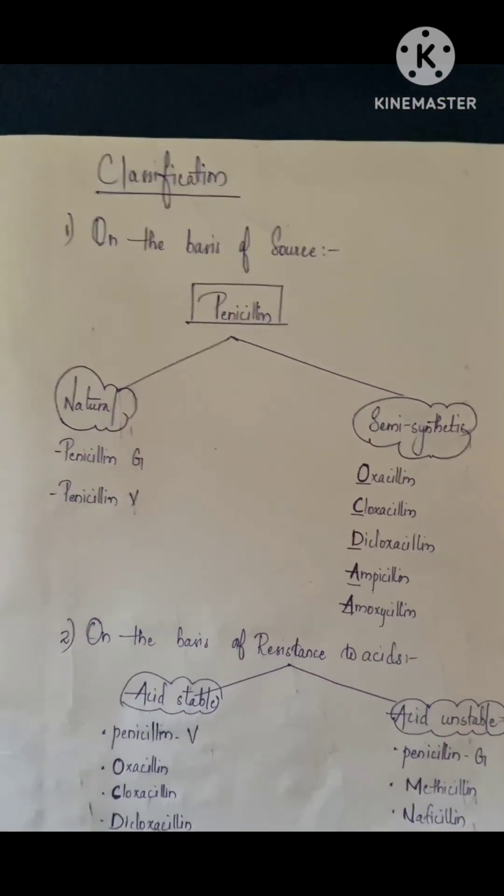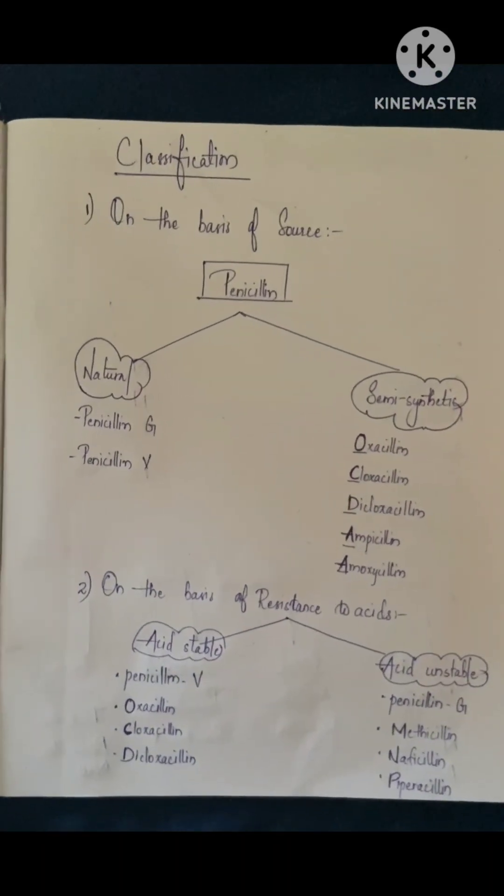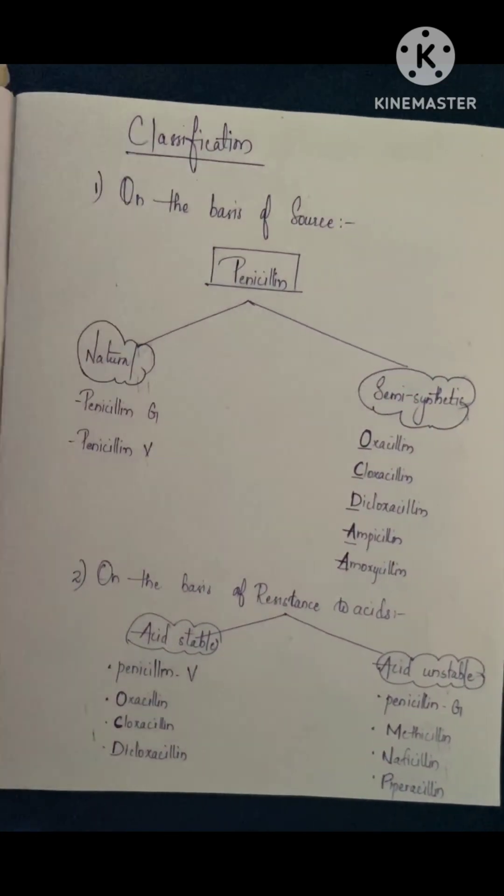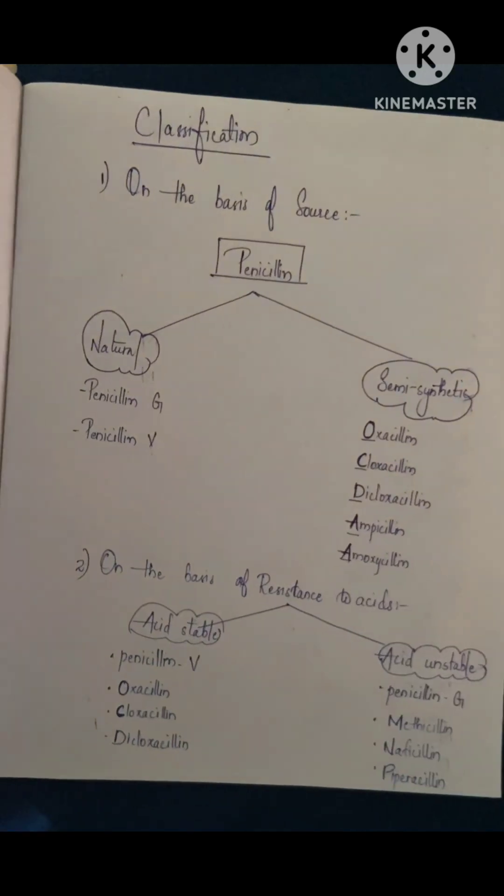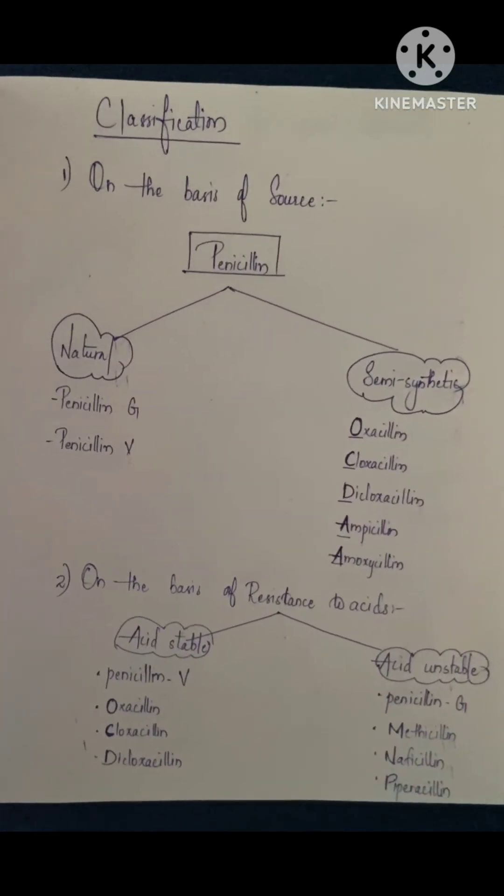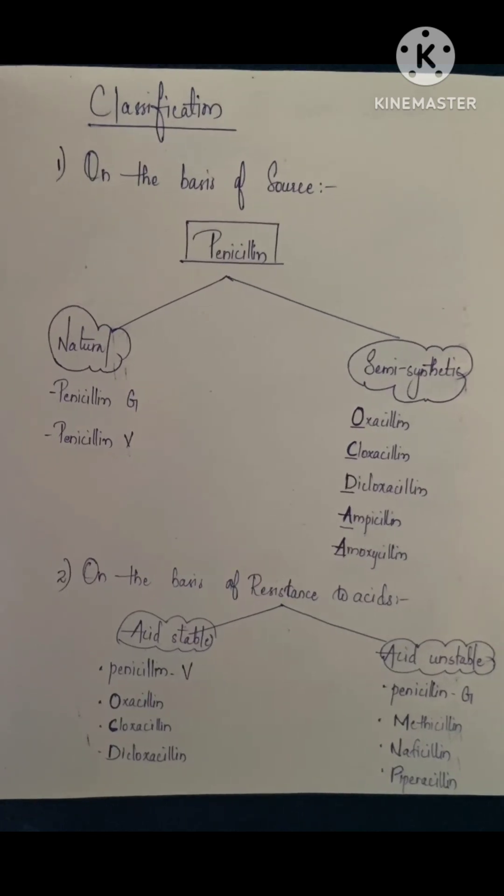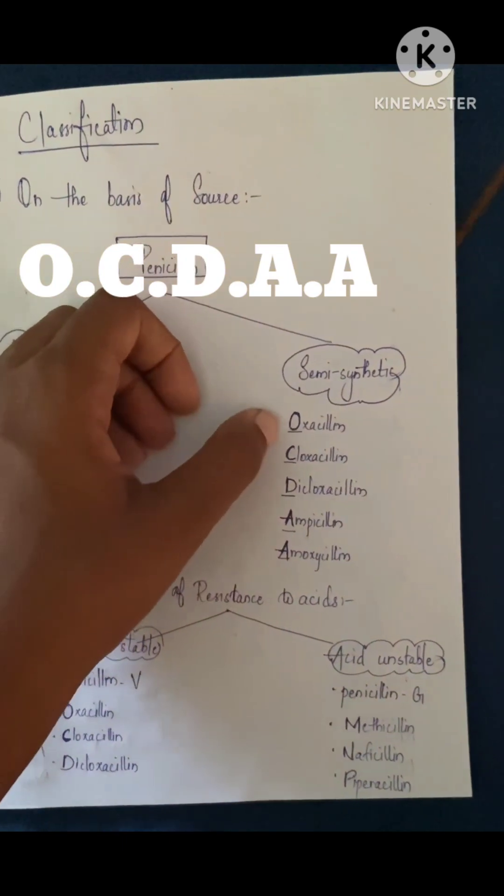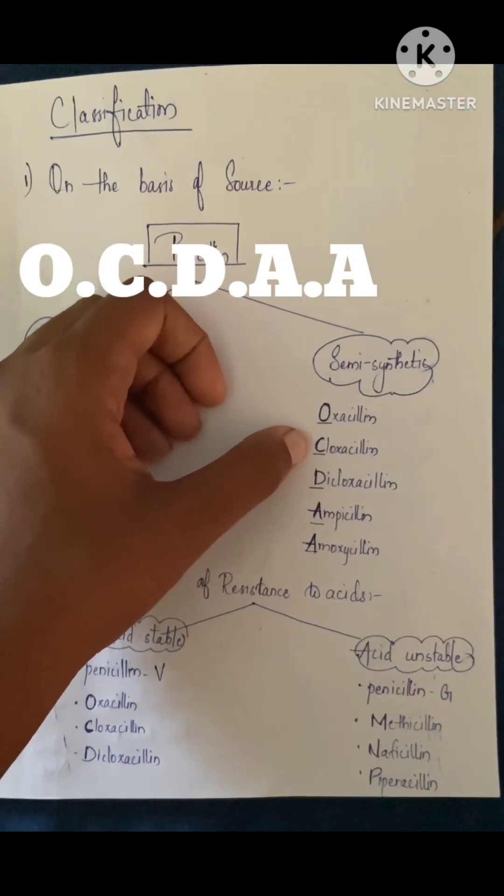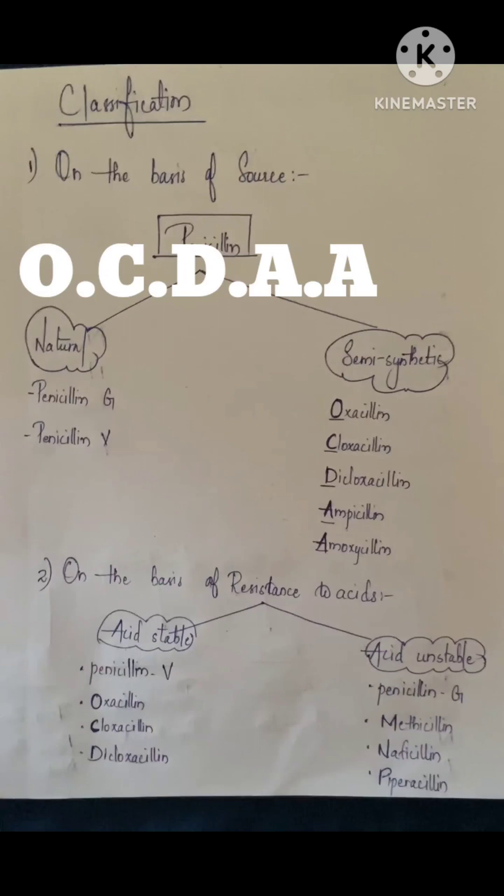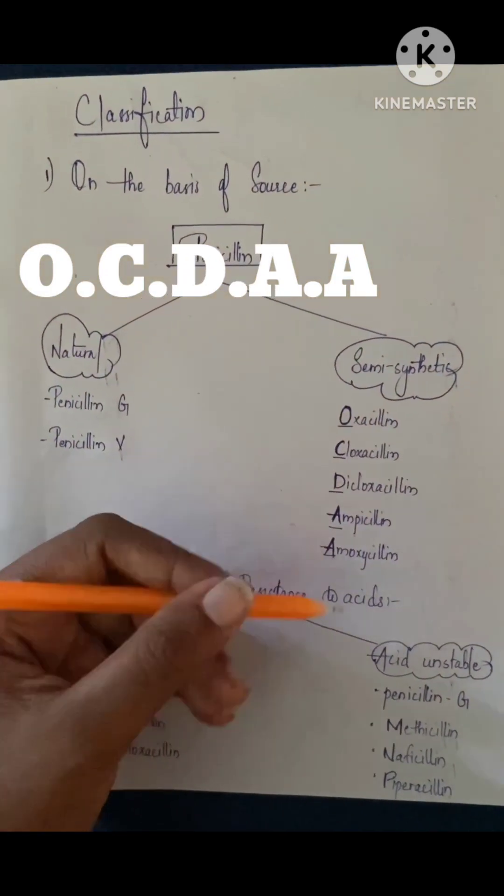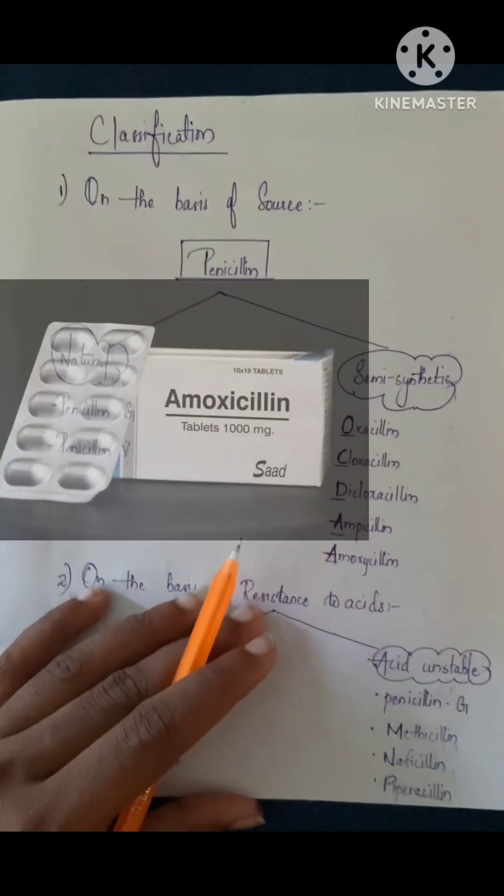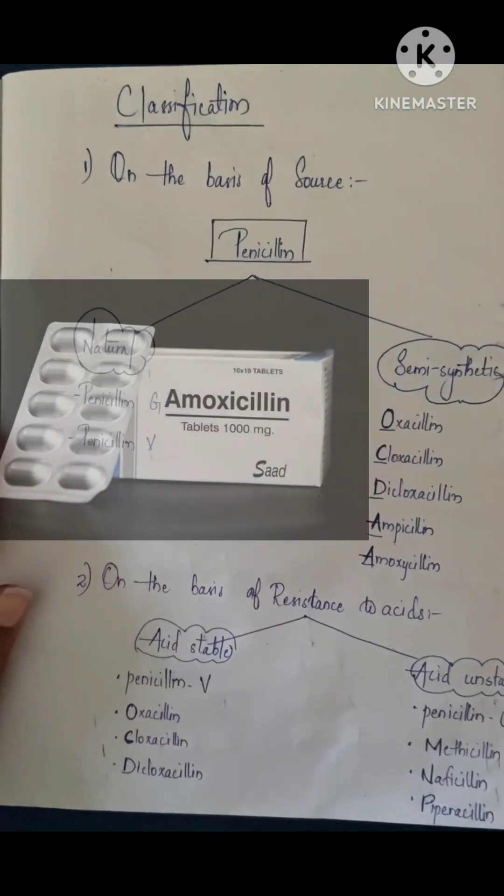Now talking about the classification of penicillin. On the basis of source: natural and semi-synthetic. Natural includes penicillin G and penicillin V. Semi-synthetic, you can remember with the mnemonic OCDAA - O for oxacillin, C for cloxacillin, D for dicloxacillin, A for ampicillin, and another A for amoxicillin.